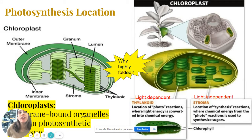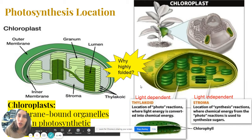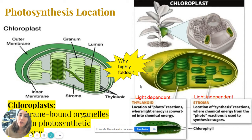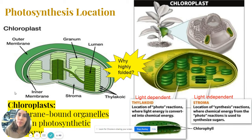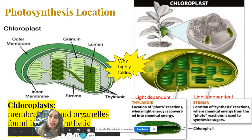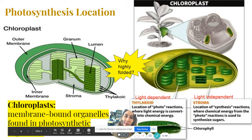Before we dive into the two main stages of photosynthesis, I want us to be familiar with the structure and logistics — where is everything happening inside a plant cell? Within a plant cell, or within a photosynthetic cell, the main organelle that we want to focus on is the chloroplast, because the chloroplast is the organelle that contains all the photosynthetic elements that are going to be used during this process.